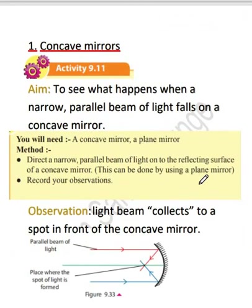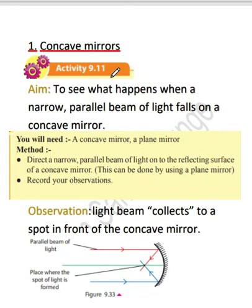Now moving on, we are going to study more about the concave mirror. To do this, we are going to perform an activity — Activity 9.11. Our aim is to see what happens when a narrow parallel beam of light falls on a concave mirror.